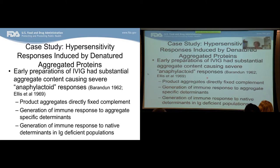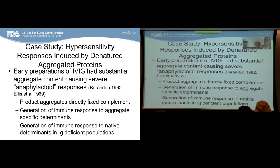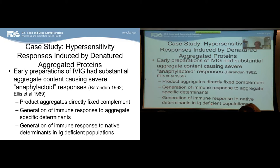Hypersensitivity responses can also be induced by denatured or aggregated proteins, and the nature of the protein as well as its administration can impact immunogenicity. This is illustrated by intravenous immunoglobulin: early IVIG preparations had substantial aggregate content, which caused severe anaphylactoid responses. Product aggregates directly fixed complement, and antibodies were to aggregate-specific determinants. Immune responses to native determinants were only generated in IgG-deficient patients. Reduction in the level of aggregates in IVIG preparations has since solved this problem.